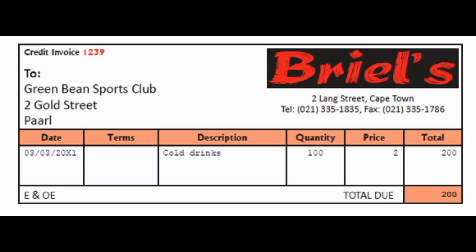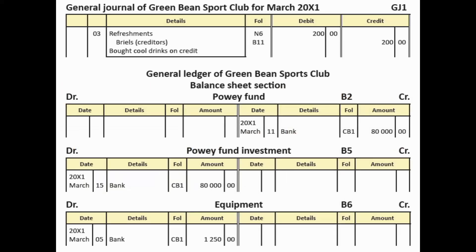For the last transaction — a credit invoice — the club bought cold drinks from Breels. We enter this in the general journal. In the general journal we debit refreshments $200,000 and credit the creditors account. Remember, we open just one account for all creditors. We can write in brackets 'Breels' or 'creditors.' The description is 'bought cool drinks on credit.'